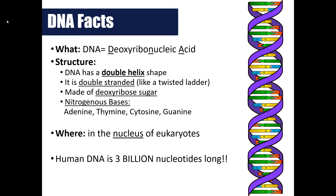DNA is double-stranded and twisted, so we say it has a double helix structure. The sugar found in DNA is deoxyribose, and the four nitrogenous bases include adenine, thymine, cytosine, and guanine — abbreviated ATCG. Also, DNA is found in the nucleus of eukaryotes. Prokaryotes do not have a nucleus. A fun fact: DNA in humans is three billion nucleotides long.